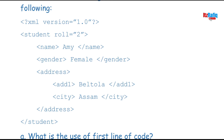No need to count the closing tags. If asked what are the children of address, address has two children: add1 and city. If asked to name the children of student, it will be name, gender, and address. Add1 and city are not children of student — they are sub-children or grandchildren of student.